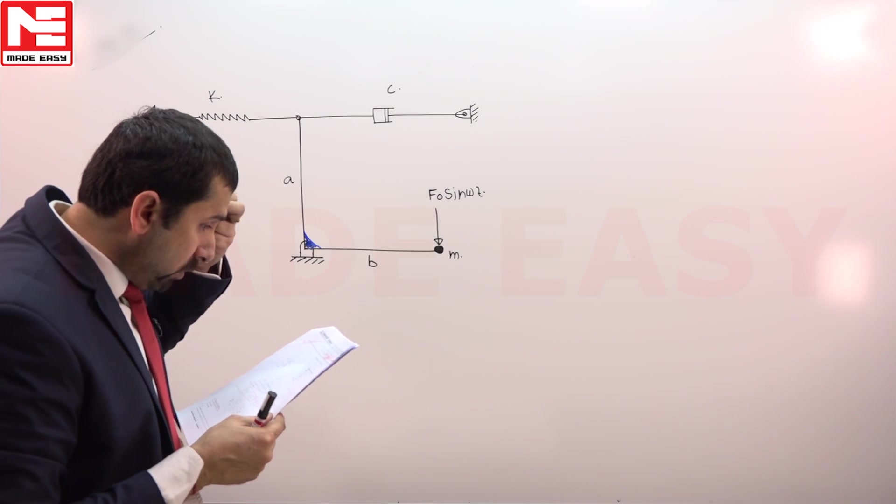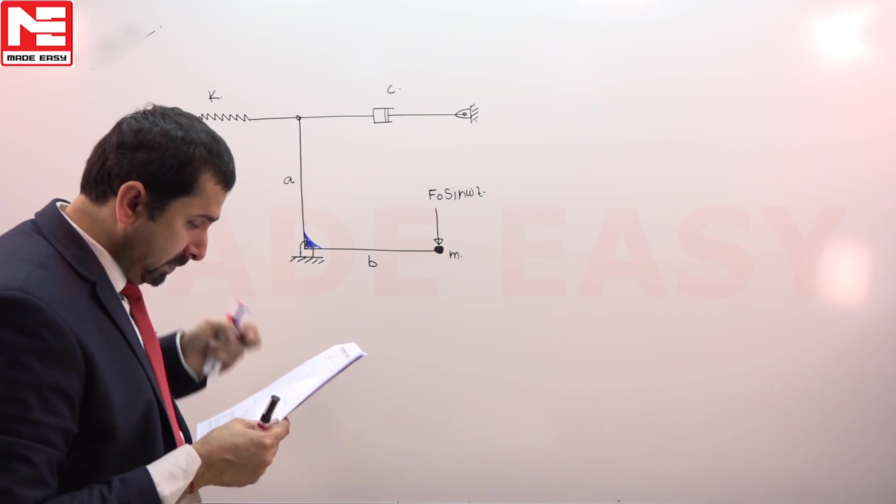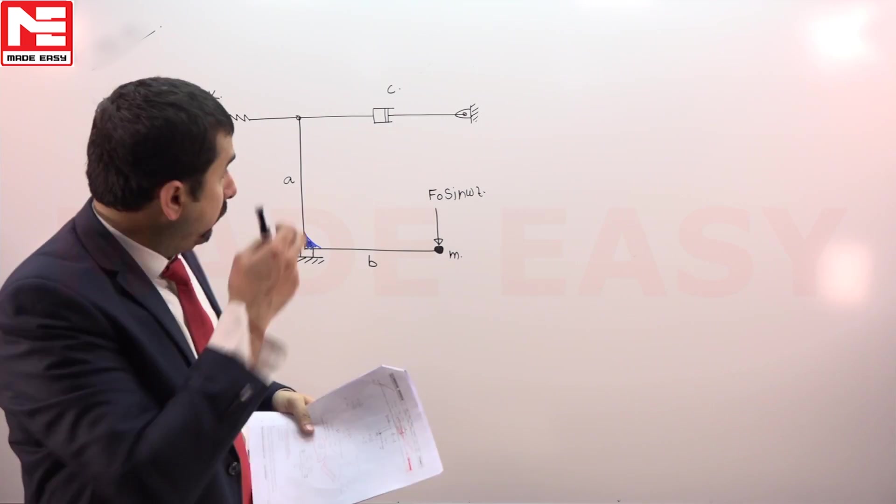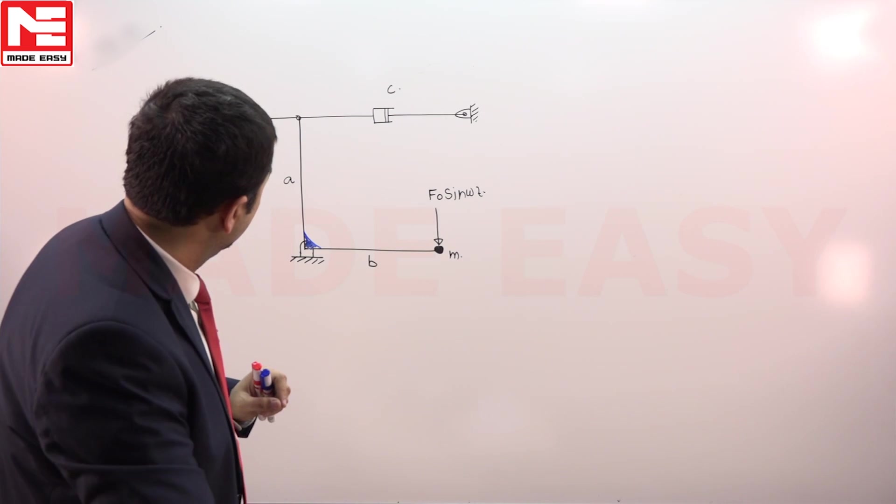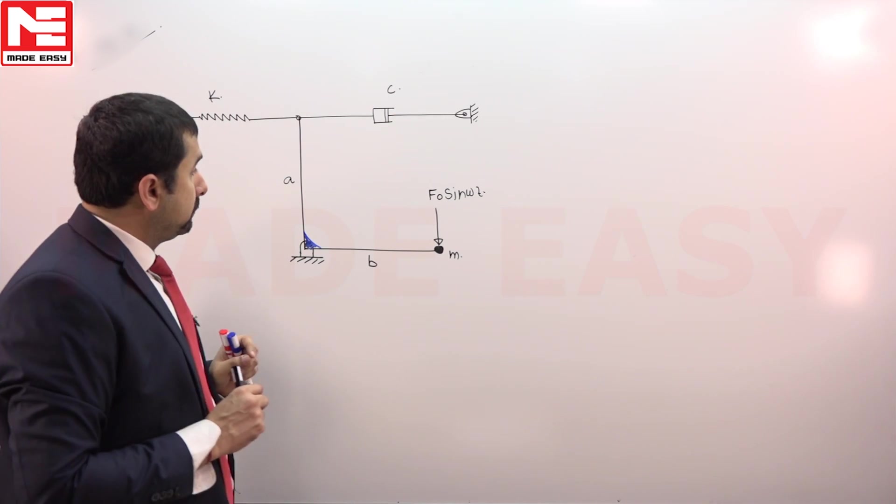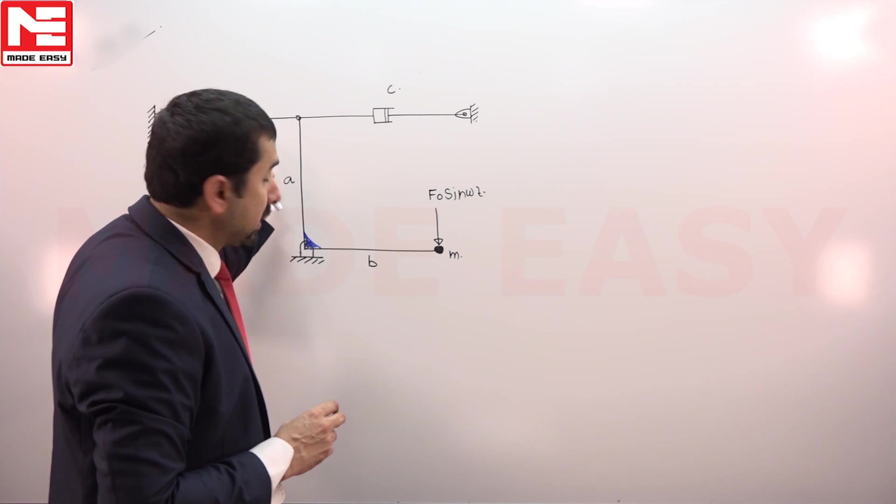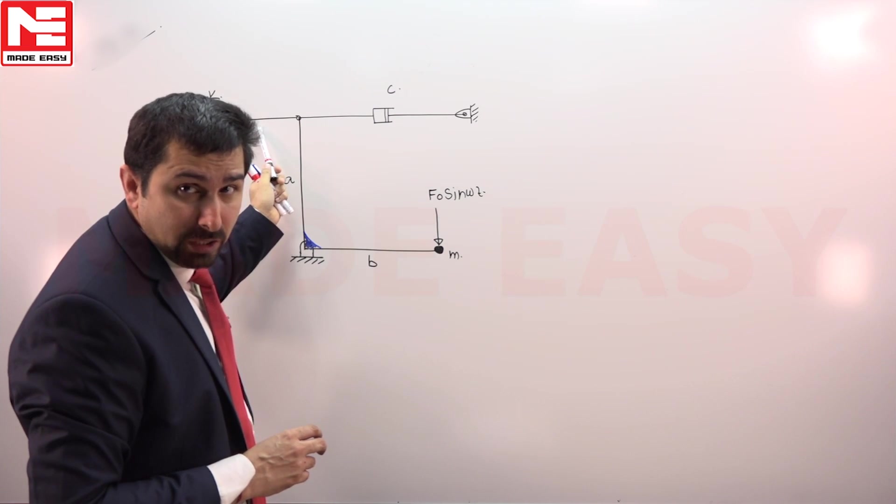They are asking: find the natural frequency of this system in radian per second. This is a very important problem because one thing I want to bring into the notice of every person here—that Mg torque will create little bit of x k x initially here.